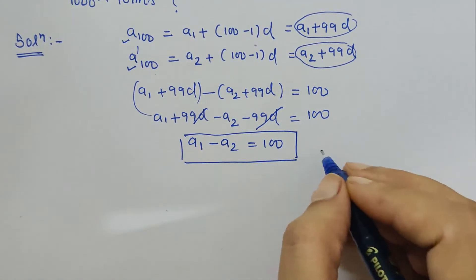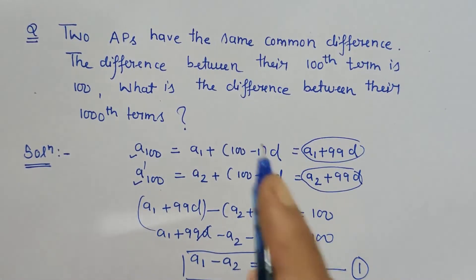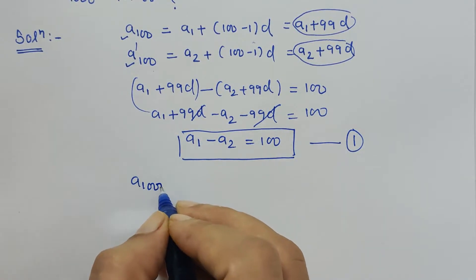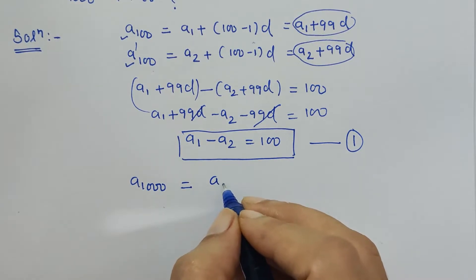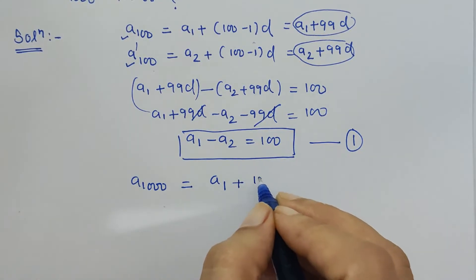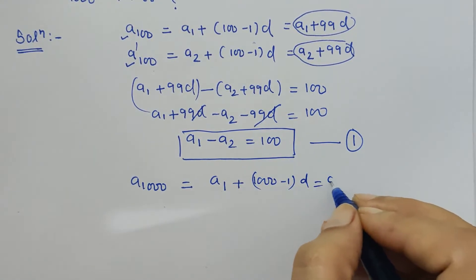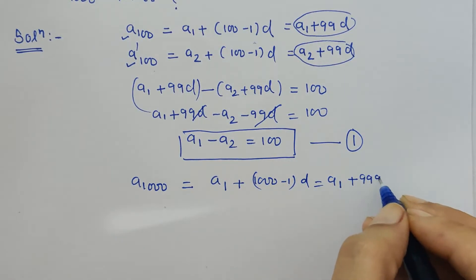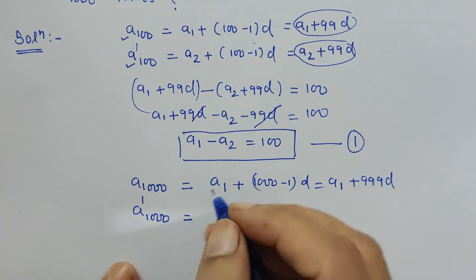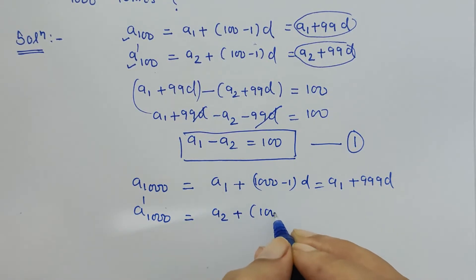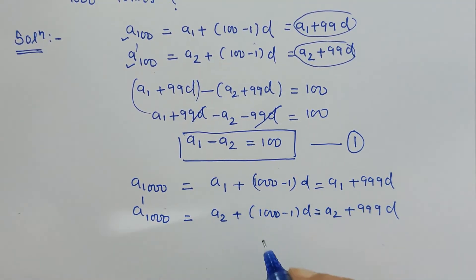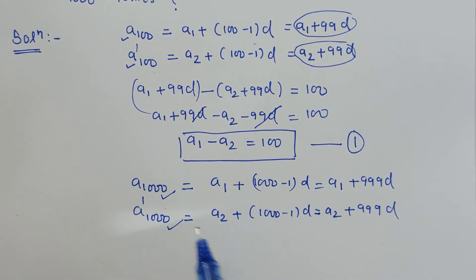Now, what is the difference between the thousandth terms? The thousandth term of the first AP, with first term a1, is a1 plus (1000 minus 1) into d, which equals a1 plus 999d. The thousandth term of the second AP is a2 plus (1000 minus 1) into d, which equals a2 plus 999d.